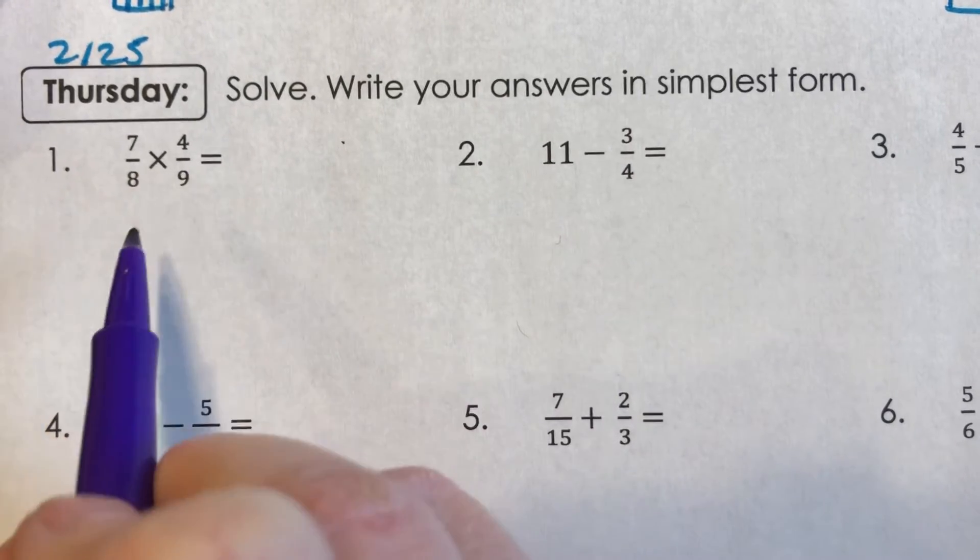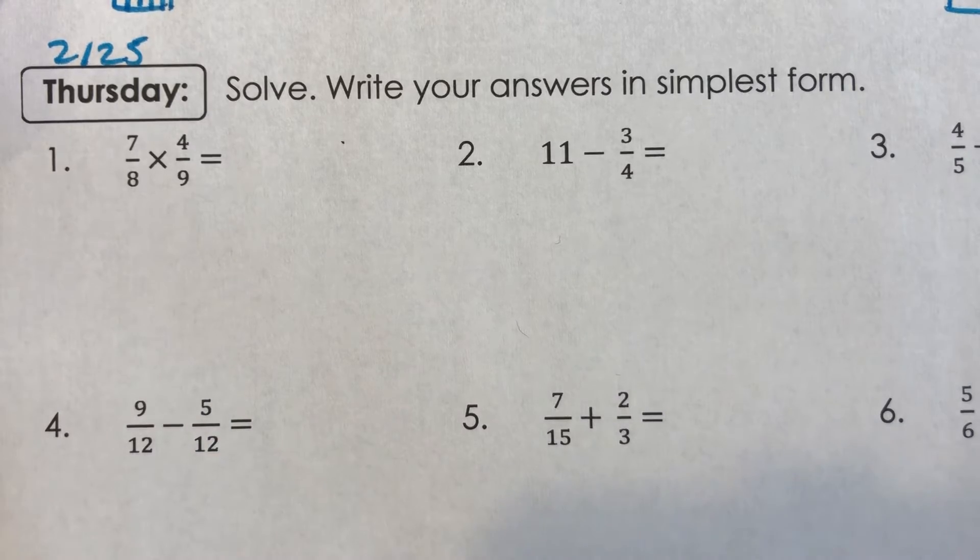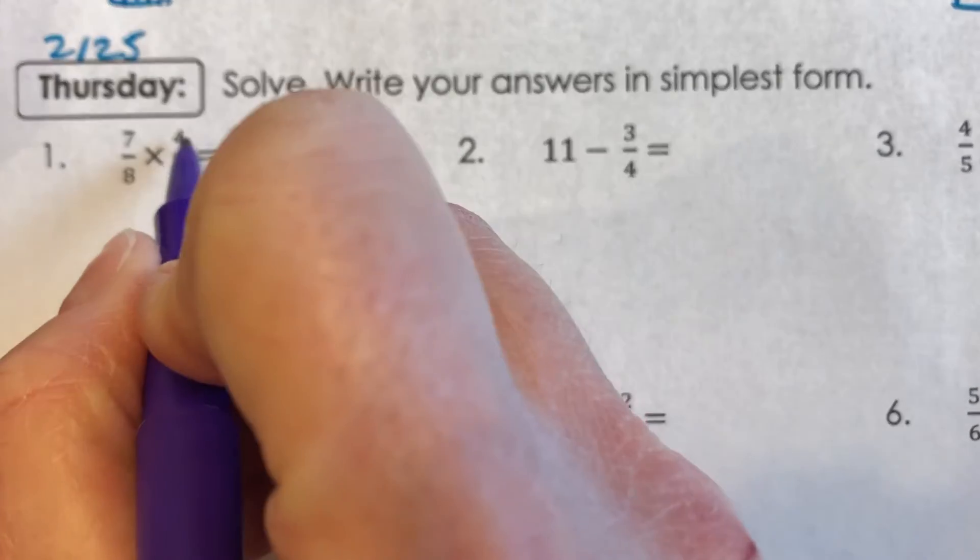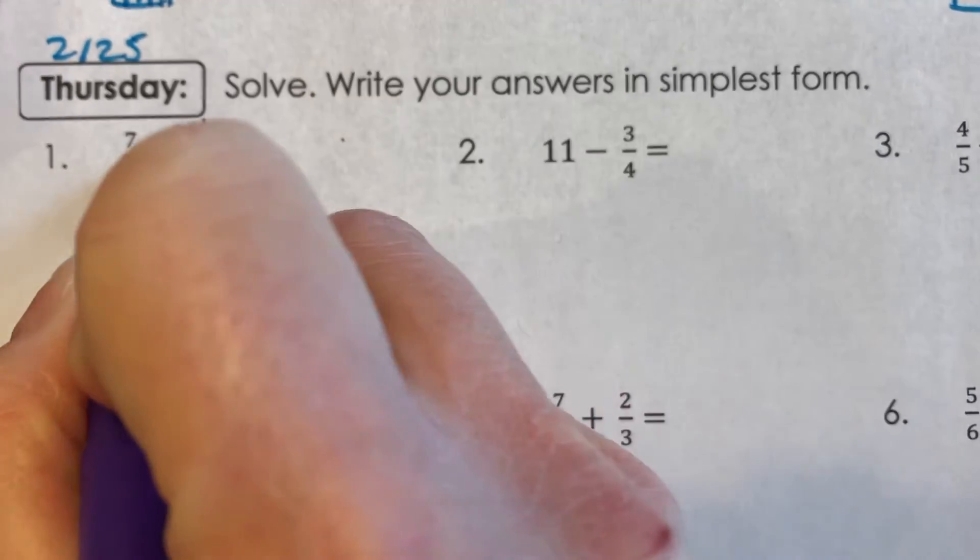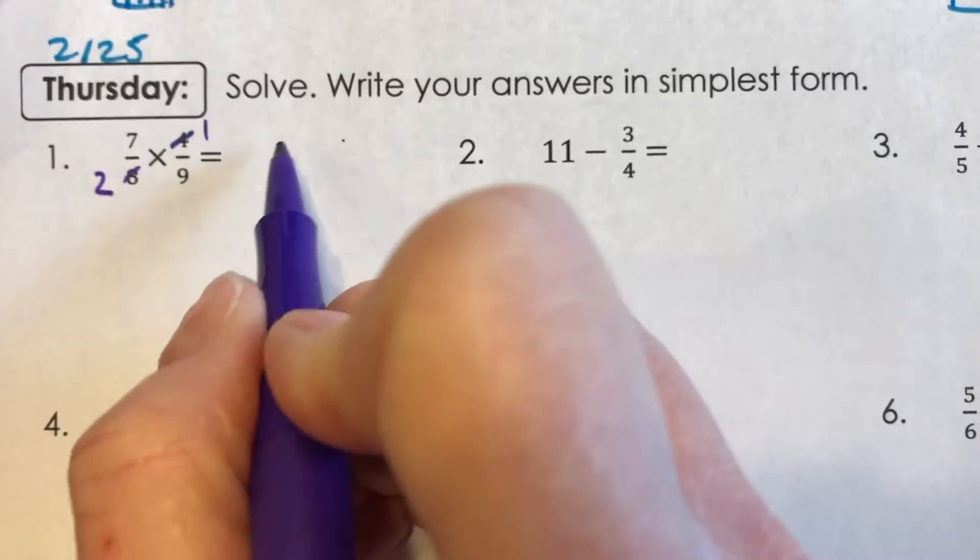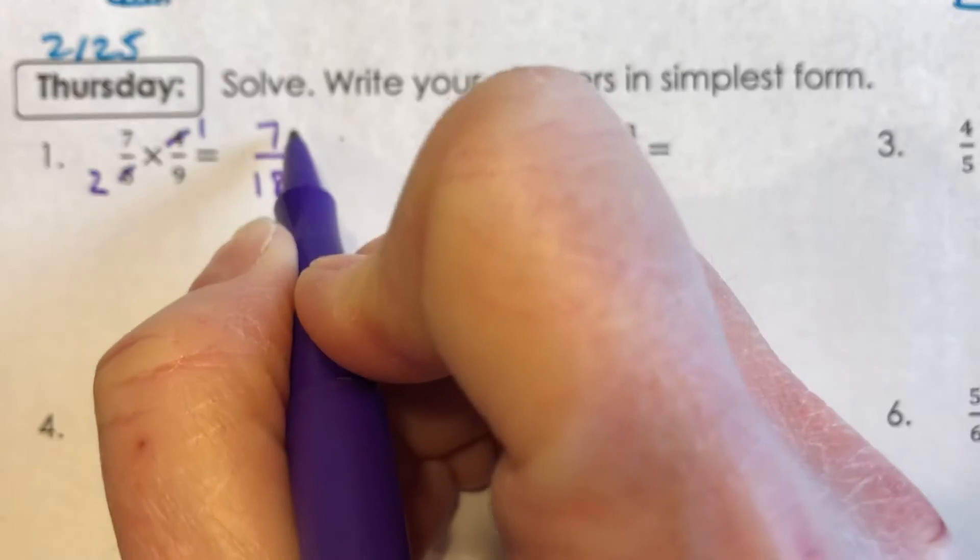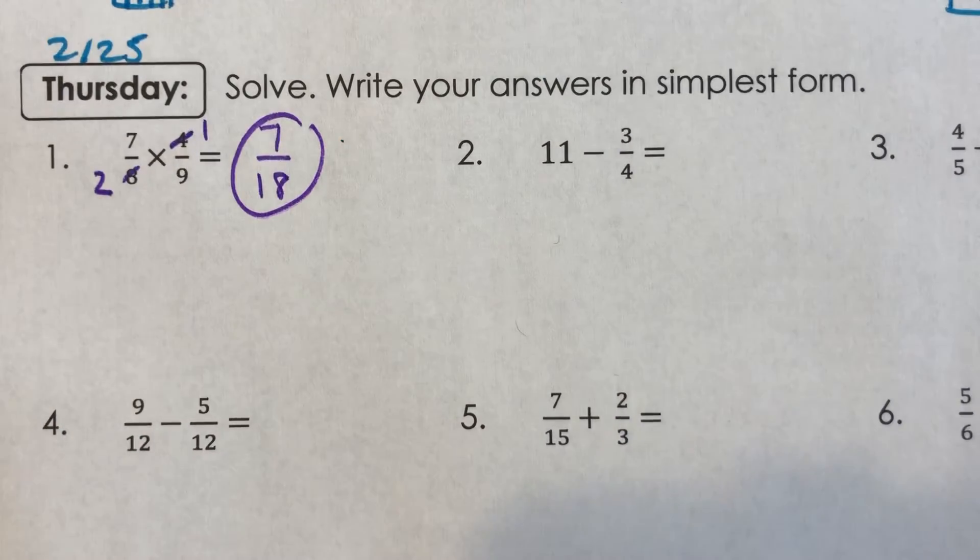So number one, seven eighths times four ninths. Multiplication, I do not need a common denominator, but I should look to see if I can cross simplify first. And this one I can. I see a four and an eight and four goes into four once and into eight twice. So seven times one is seven and two times nine is 18 and seven eighteenths is our answer.